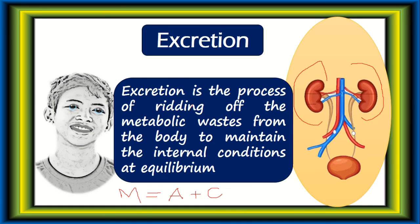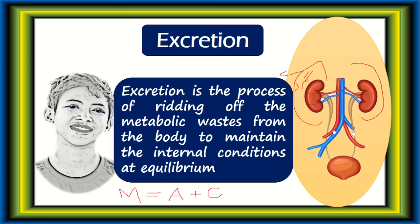Metabolism includes anabolism and catabolism. In anabolism, new cells and new tissues are built — there is growth. In catabolism, complex chemical compounds are broken down. Metabolism produces waste material which needs to be removed. Excretion removes this metabolic waste. The major organ for excretion is the kidney, but the skin also plays a role in excretion.